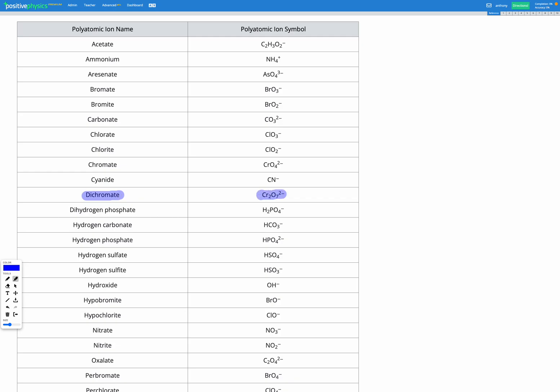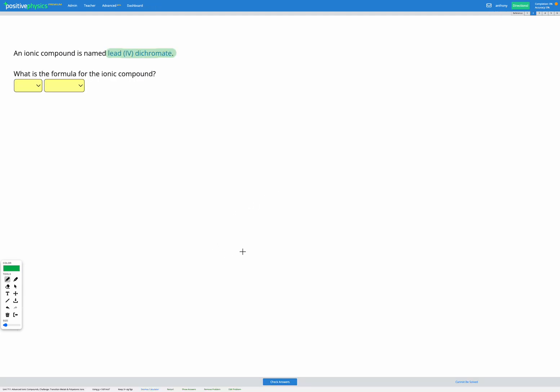It has the formula Cr2O7 2-. So we've got lead and we've got dichromate Cr2O7 2-. Also the question tells us it's lead-4-dichromate. The 4 tells us the charge on the lead is 4+.